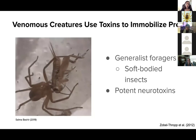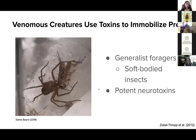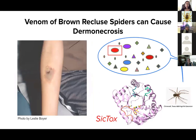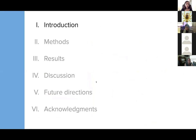Their venom contains potent neurotoxins. The venom of brown recluse spiders is also pretty notorious for its ability to cause dermal necrosis in humans, as seen in this picture. The toxins responsible for these symptoms are called CICTOX, which is short for Sicariidae toxins, and they're an abundant component in the venom of brown recluse spiders. This is an outline of what the rest of this talk will entail, and I'll begin with an introduction on CICTOX specifically.